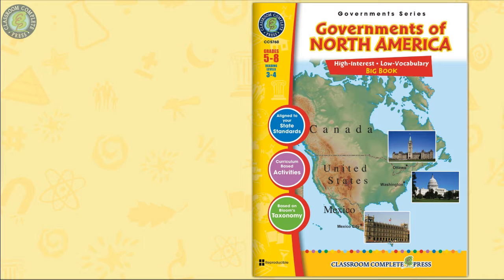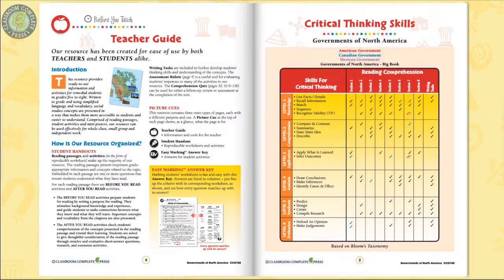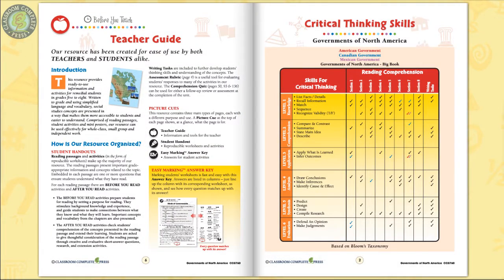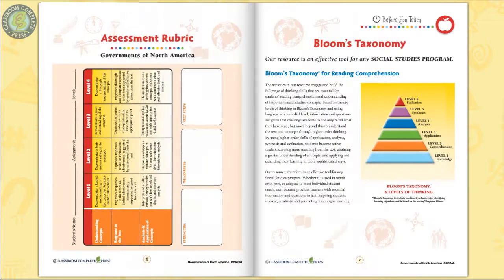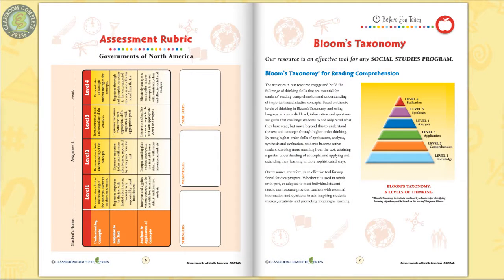Aligned to the state standards, this resource is designed for grades 5 to 8 with a simplified reading level of grades 3 to 4. 170 pages of content within 24 chapters make up the bulk of this unit. We also include an assessment rubric, a critical thinking skills rubric, and a vocabulary list.